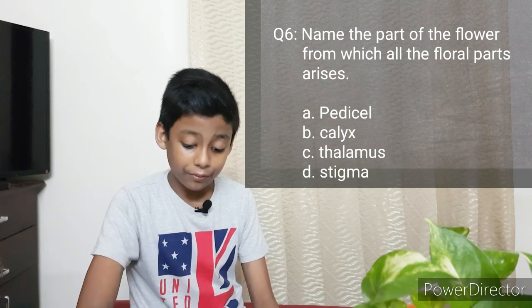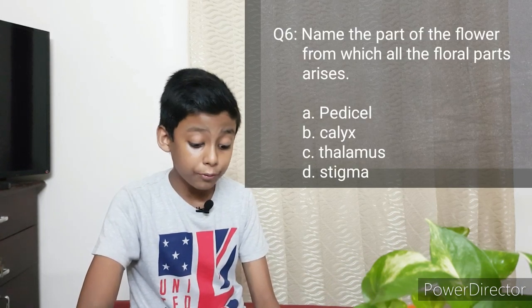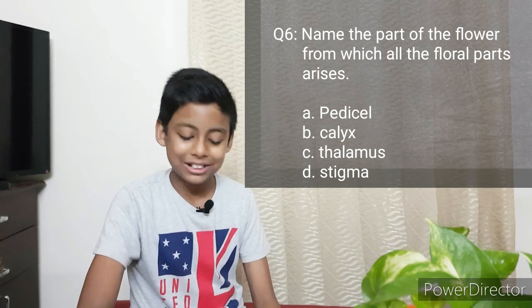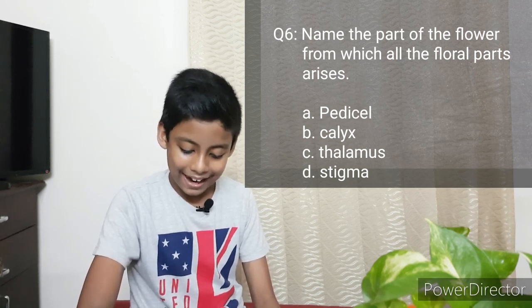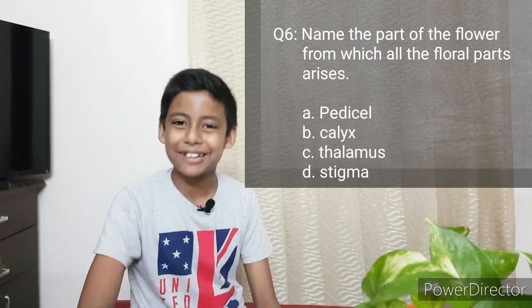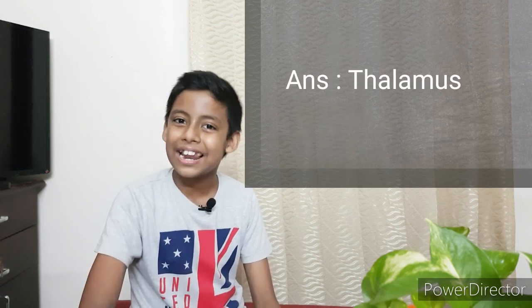The sixth question: Name the part of the flower from which all floral parts arise. Options: Pedicel, Calyx, Thalamus, Stigma. The answer is Thalamus.